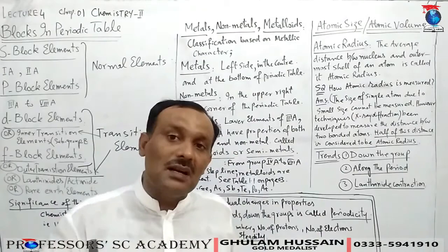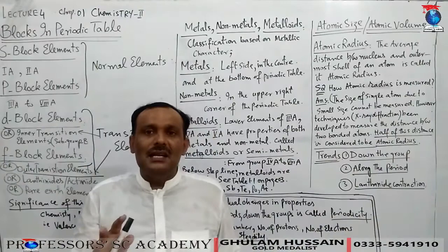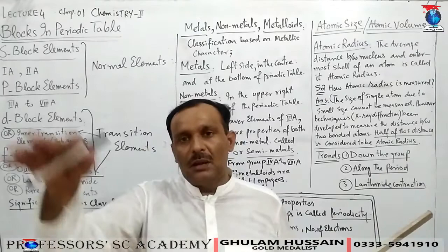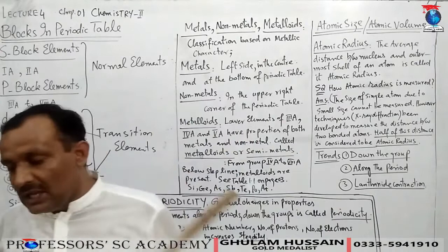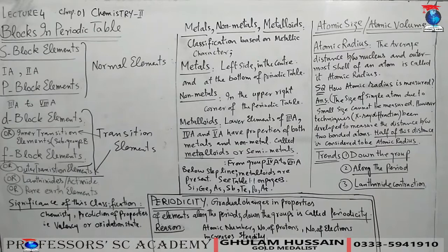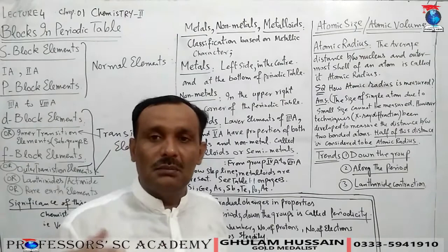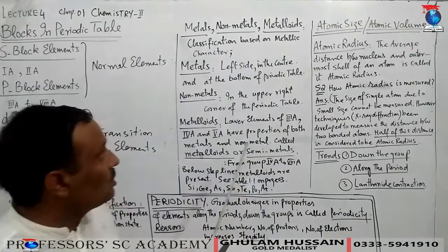There is a steady increase in the number of protons and number of neutrons along the period and down the group. Therefore, the change in physical and chemical properties of elements is driven by the atomic number — which increases gradually — and that is why properties change. Now let us begin with atomic size and atomic volume.